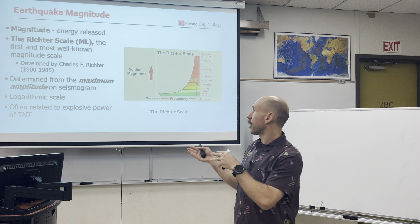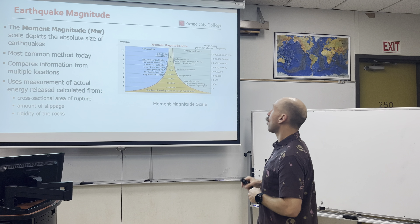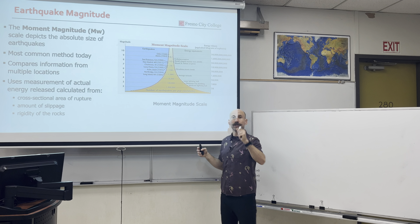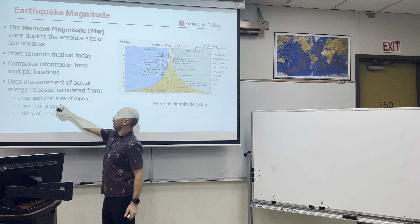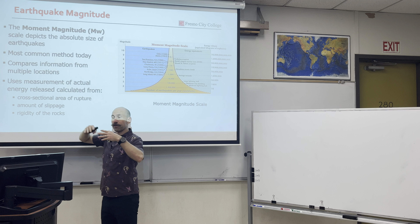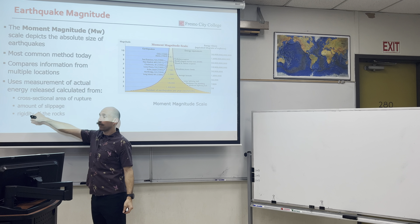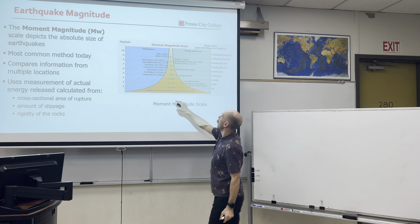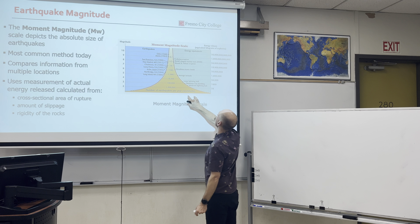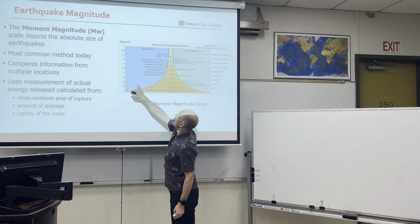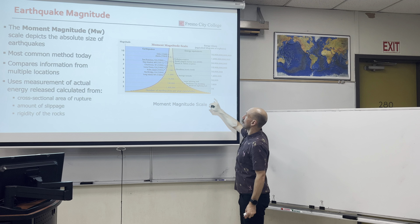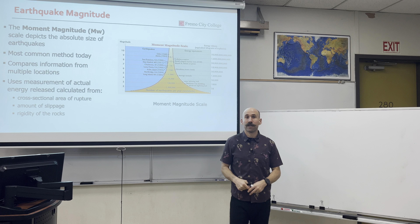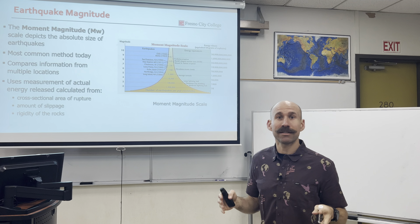That's a really easy way to get a quick understanding of how much energy is released. More commonly now is the moment magnitude scale, which compares information from seismographs all over the world — the global seismograph network. It goes more deeply, using the cross-sectional area of the rupture, how much movement occurred along the fault, and the characteristics of the rocks that broke. It's another logarithmic scale showing the number of earthquakes and their magnitude. You can see there are a lot more small earthquakes; the higher up you go, the fewer large earthquakes. Small earthquakes are extremely common; big earthquakes are not.